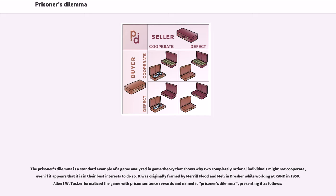The Prisoner's Dilemma is a standard example of a game analyzed in game theory that shows why two completely rational individuals might not cooperate, even if it appears that it is in their best interest to do so. It was originally framed by Meryl Flood and Melvin Drescher while working at RAND in 1950. Albert W. Tucker formalized the game with prison sentence rewards and named it Prisoner's Dilemma, presenting it as follows.